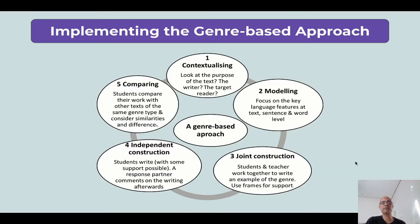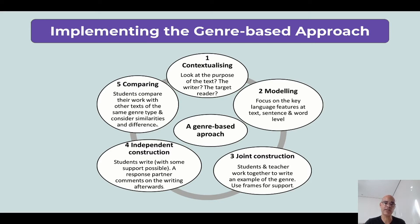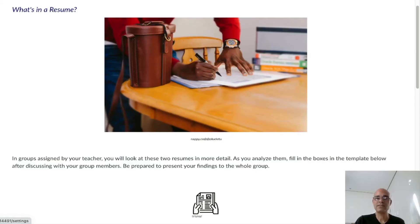Let's talk about the genre-based approach. When teaching a genre — recount, narrative, persuasion, etc. — I need to go through certain phases: contextualizing, modeling, joint construction, independent construction, and comparing. The students will analyze the genre first, understand its elements, put one sample together as a group, then put one together independently, and finally compare their samples and learn from each other. In the next part of this video, we're going to look at an example of how to implement the genre-based approach for a writing lesson.